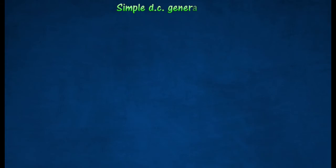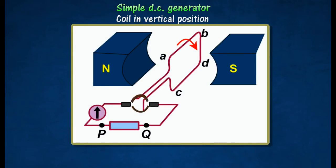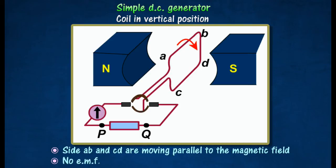Working Principle of Simple Direct Current Generator. As the coil rotates through the vertical position, the sides A, B and C, D are moving parallel to the magnetic field. As a result, no electromotive force is induced in the coil.